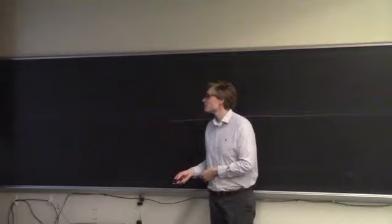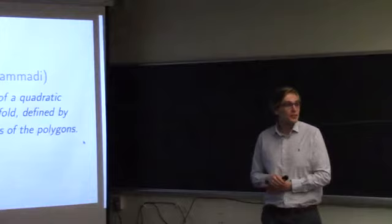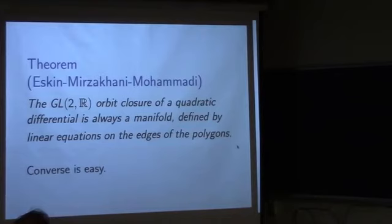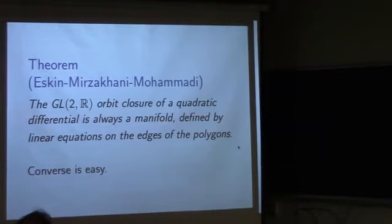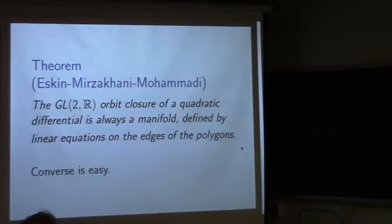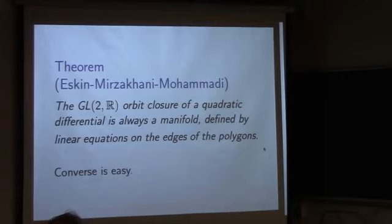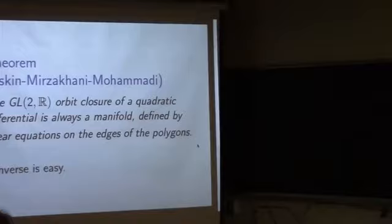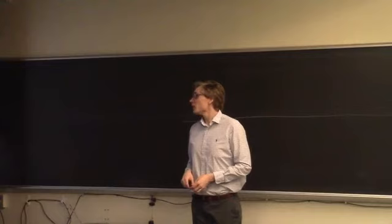Then a big event happened. There was a big theorem of Eskin-Mirzakhani and a second paper by Eskin-Mirzakhani-Mohammadi — one of the results for which Mirzakhani won the Fields Medal. They showed that GL₂(ℝ) orbit closures are always manifolds. This is a really amazing theorem — in dynamics, orbit closures are typically fractals. But here the orbit closures are very nice, and not only are they manifolds, but they're even manifolds locally cut out by linear equations.